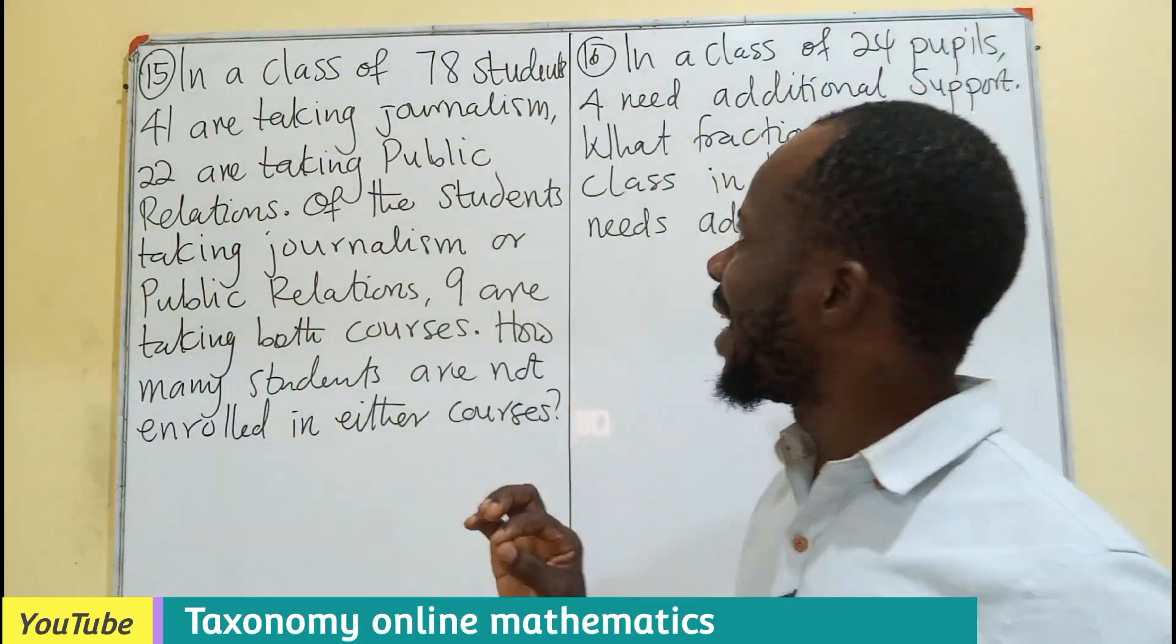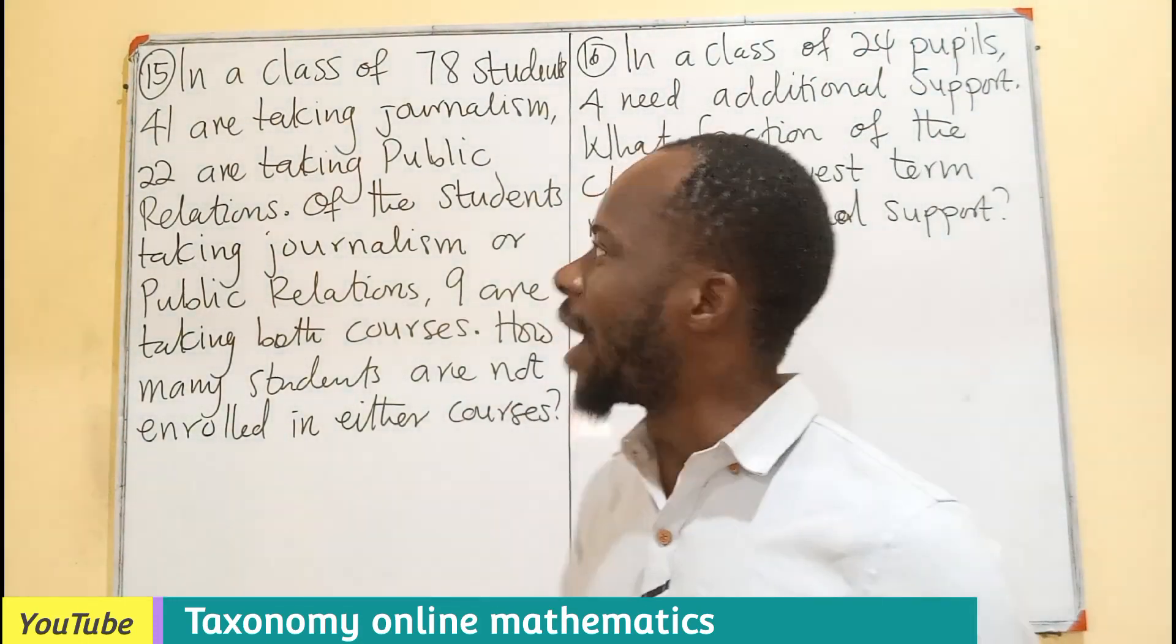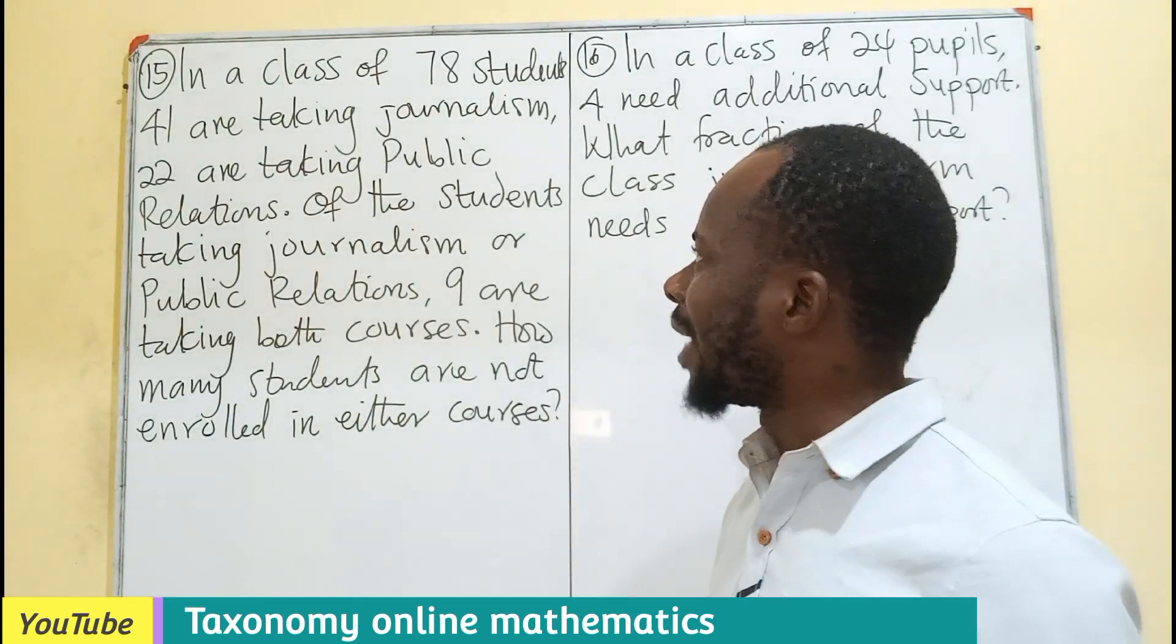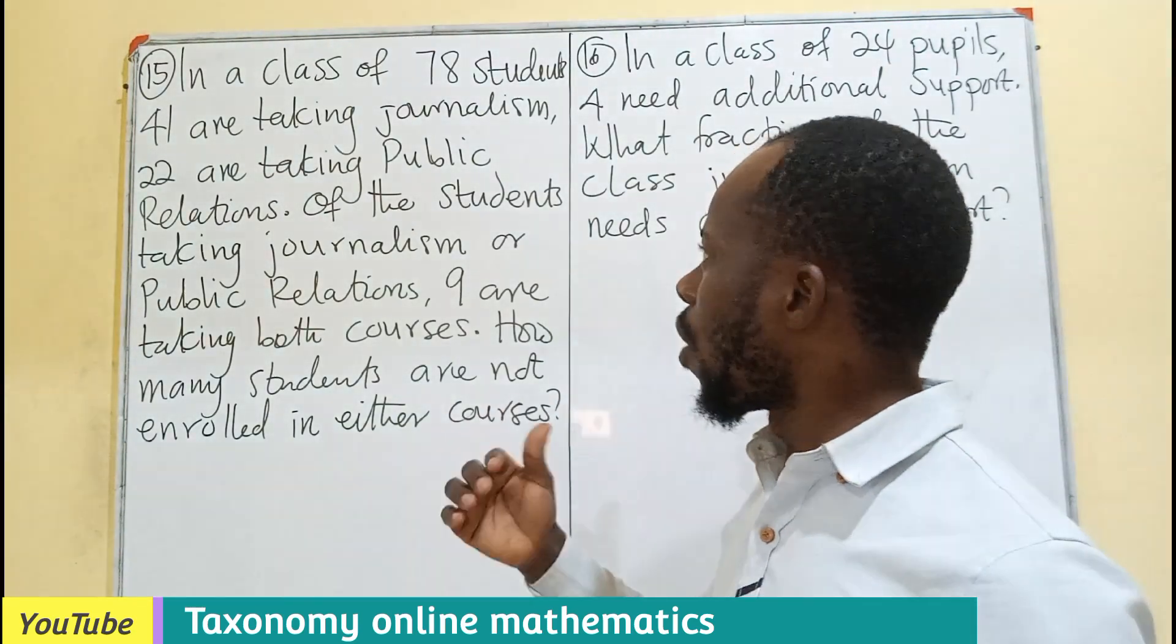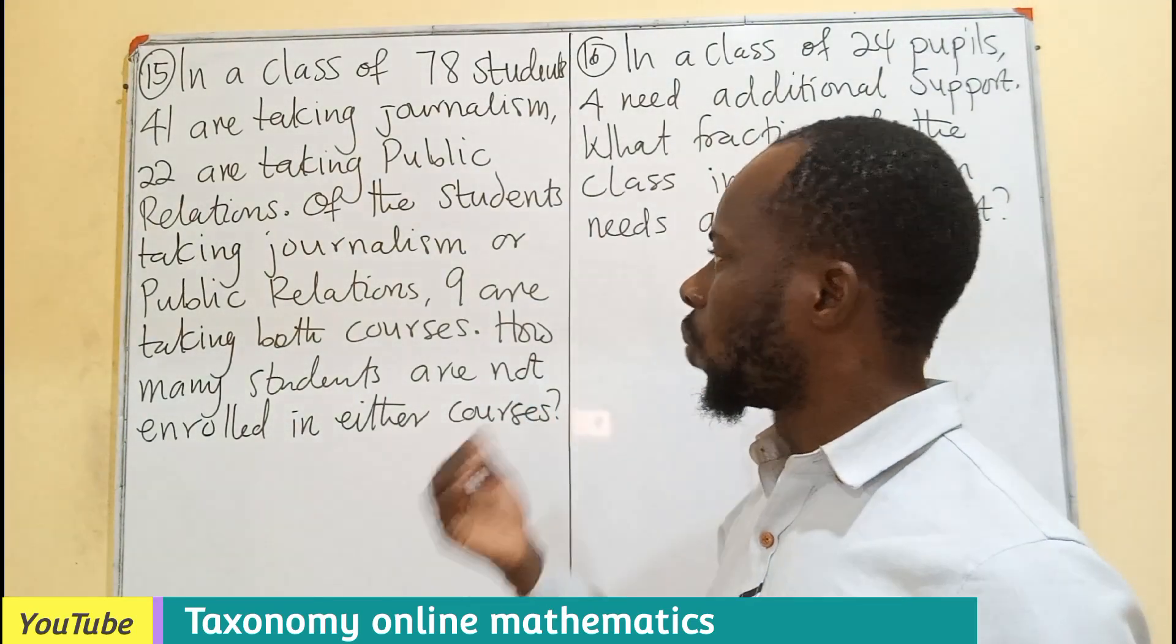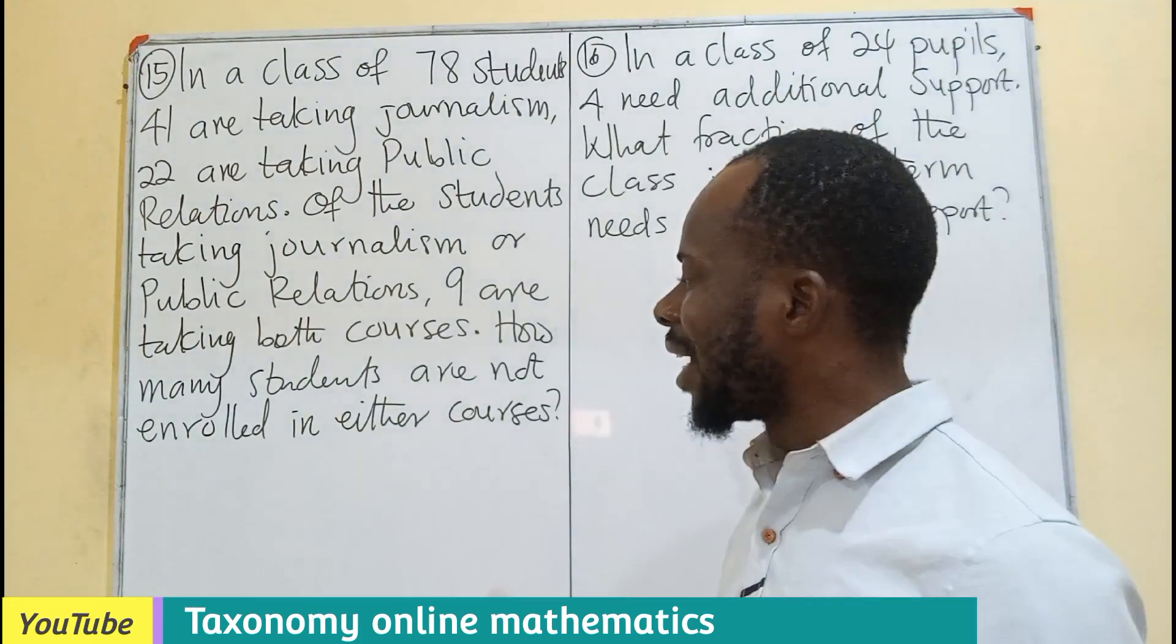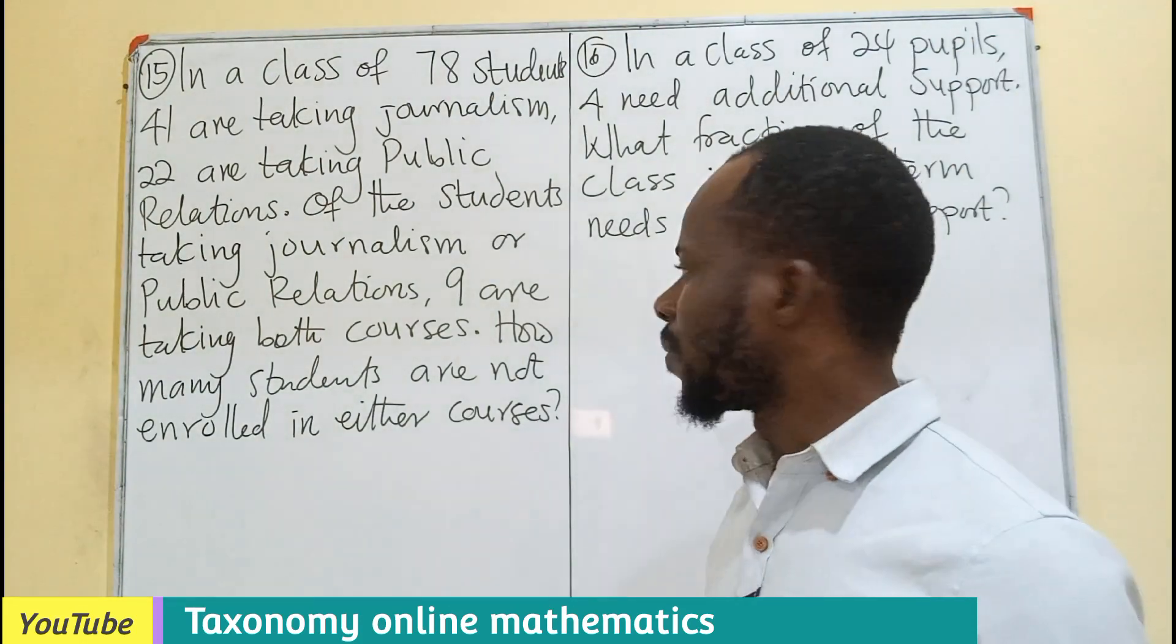In a class of 78 students, 41 are taking journalism and 22 are taking public relations. Of the students taking journalism or public relations, 9 are taking both courses.